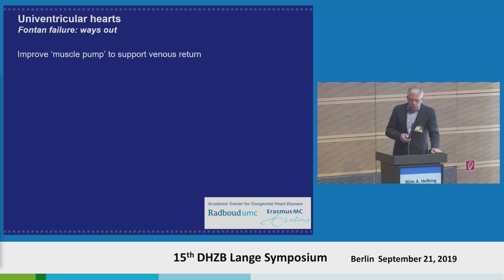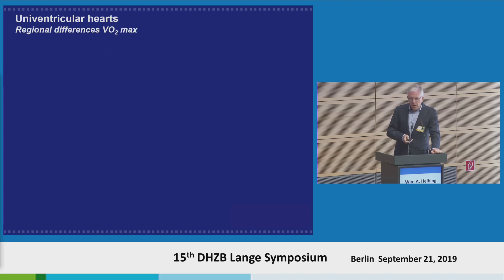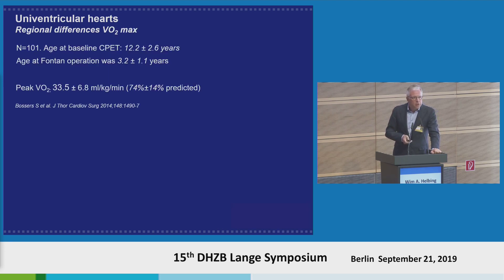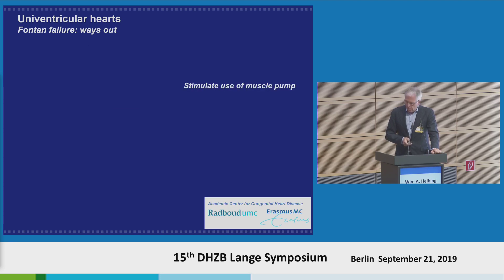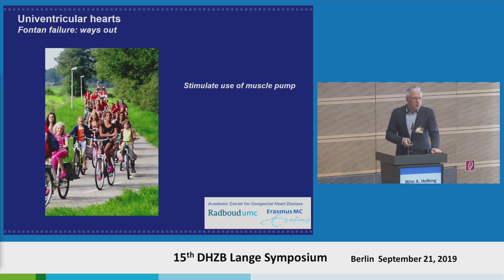Perhaps another promising field is using the muscle pump to support venous return. There are remarkable regional differences in exercise performance across the literature. Data from a relatively young group of Dutch children shows exercise performance with Fontan circulation at about 74% of predicted at age 12, while Japanese patients at the same age show a 10 percentage point lower maximal oxygen uptake. It is tempting to think this may relate to how lifestyle stimulates use of the muscle pump — a typical Dutch scene of children cycling to school every day and adults continuing this lifestyle.